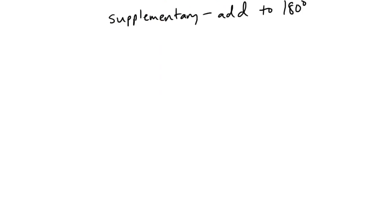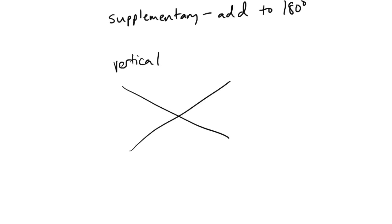Some other kinds of angles include vertical angles. If I have two straight lines intersecting each other at some point, the angles across from each other will be congruent — they'll be equal. So this angle here is going to equal this angle here, and they're called vertical angles. Handy things to remember.